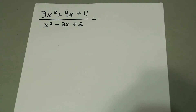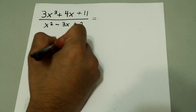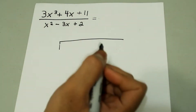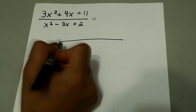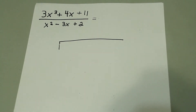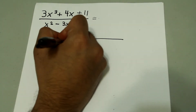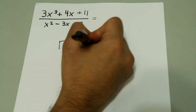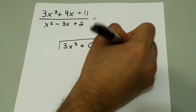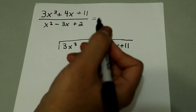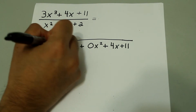Let's do another example. In this case we have 3x cubed plus 4x plus 11 over x squared minus 3x plus 2. The numerator goes inside and the denominator goes outside. Notice that we have x cubed and then 4x — the x squared term is missing. When writing it inside for the division, you want to include the x squared term with a zero coefficient. So: 3x cubed plus 0x squared plus 4x plus 11. The denominator, x squared minus 3x plus 2, goes outside.